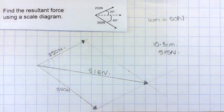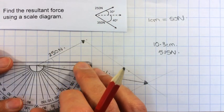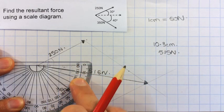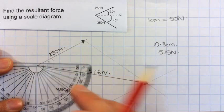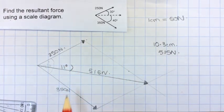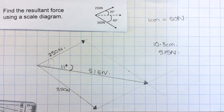And the last thing to do is measure the angle that that is at. So carefully line up my protractor, and the angle seems to be about 11 degrees. So I've got my resultant vector with that angle, 11 degrees, 515 newtons.